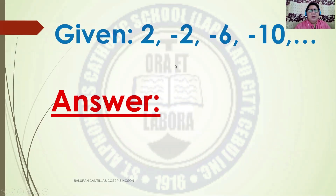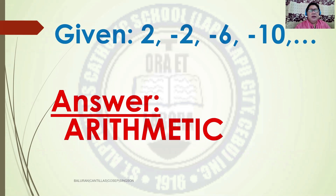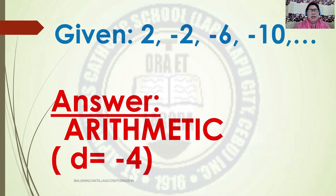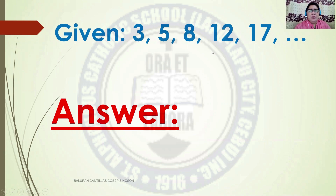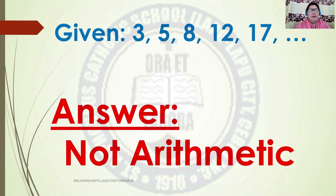Given 2, negative 2, negative 6, negative 10, and so on — the answer is Arithmetic Sequence because the Common Difference is negative 4. Next, given 3, 5, 8, 12, 17 — the answer is Not an Arithmetic Sequence. Let's verify: 5 minus 3 is 2, 8 minus 5 is 3, and so on, so we cannot find a Common Difference.